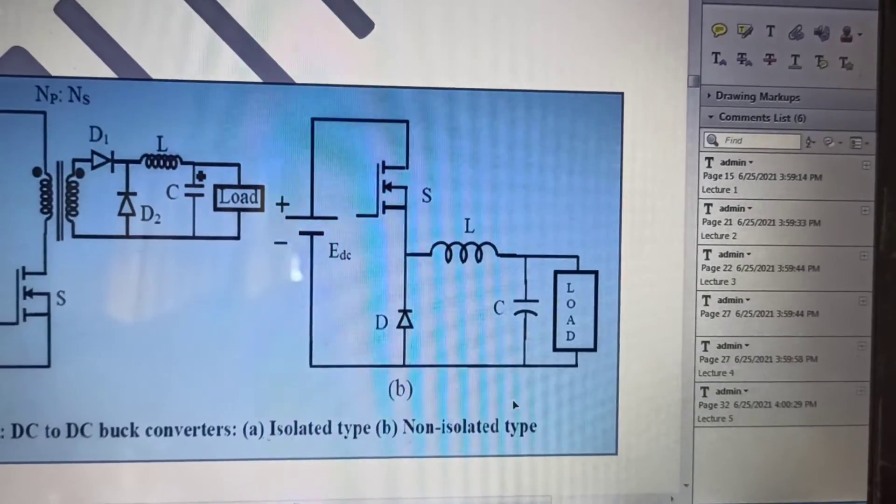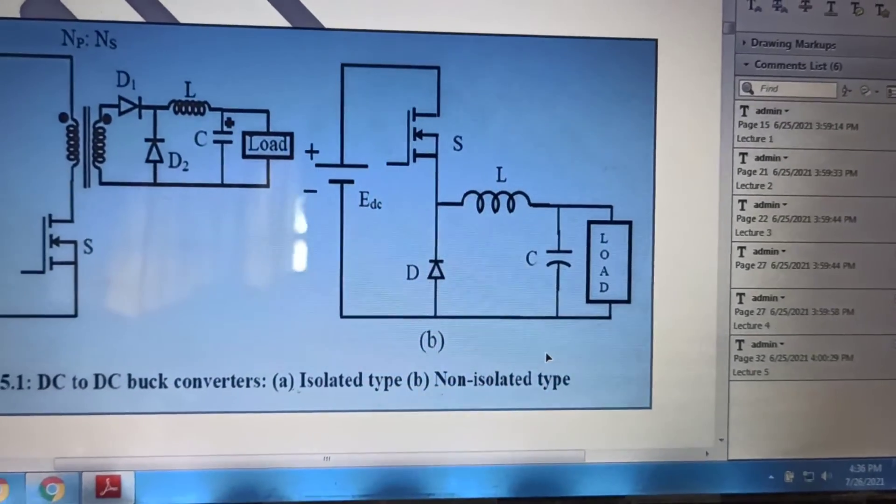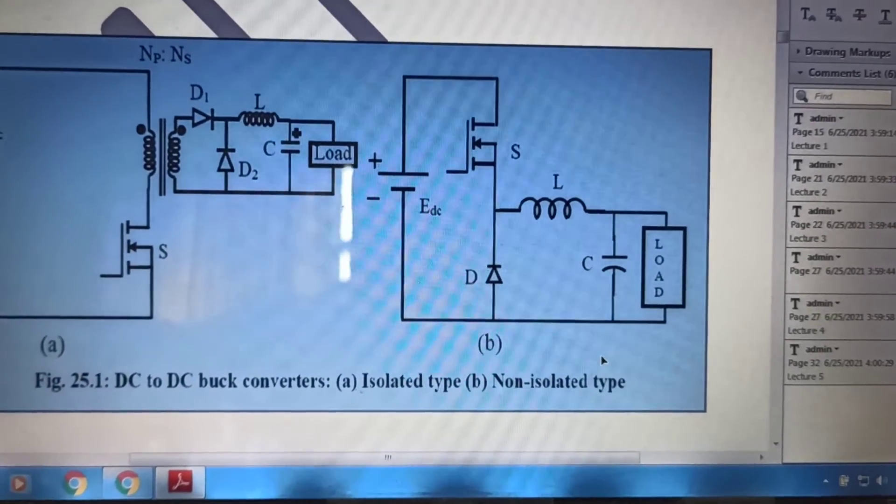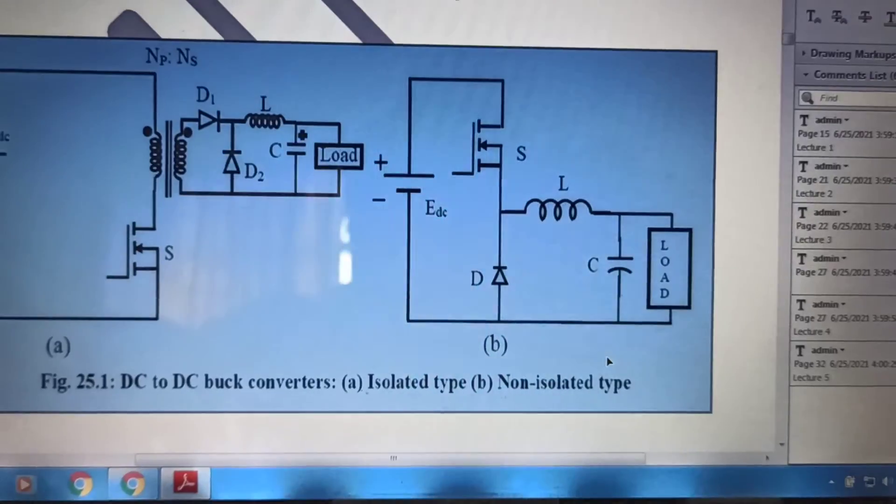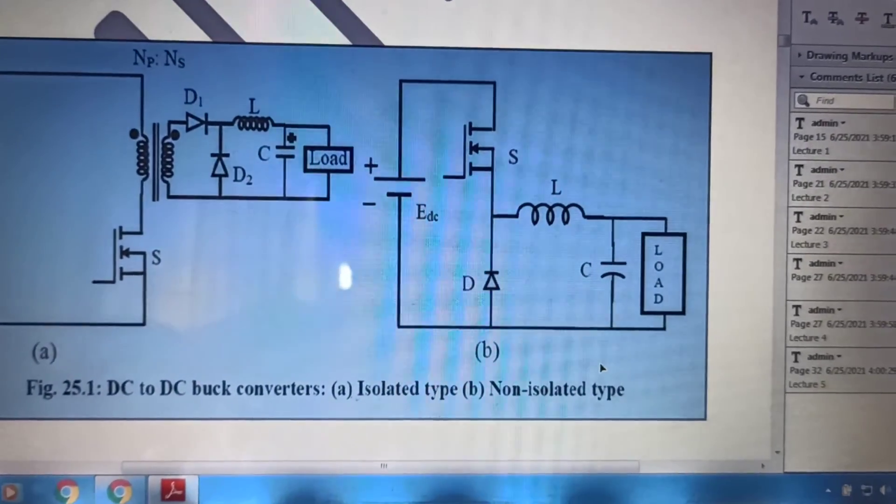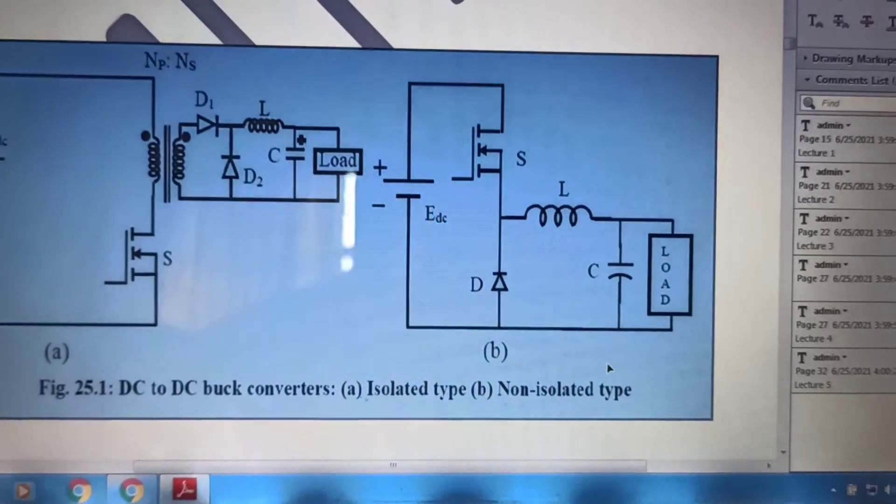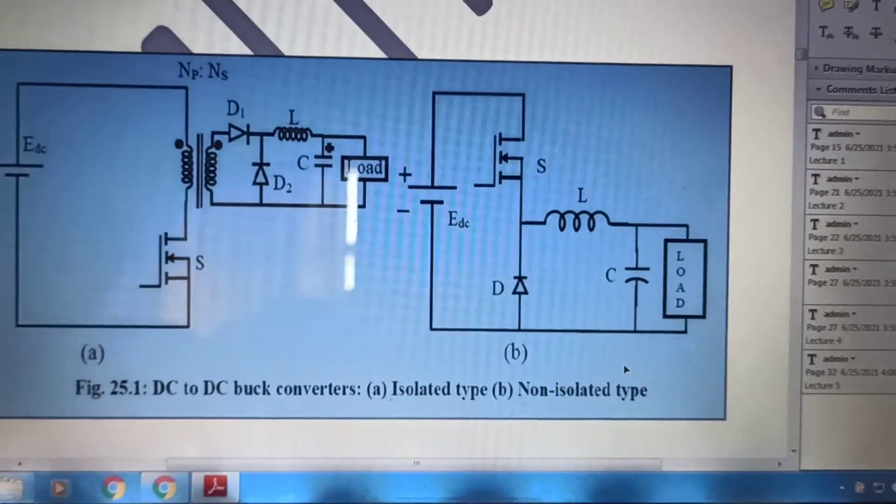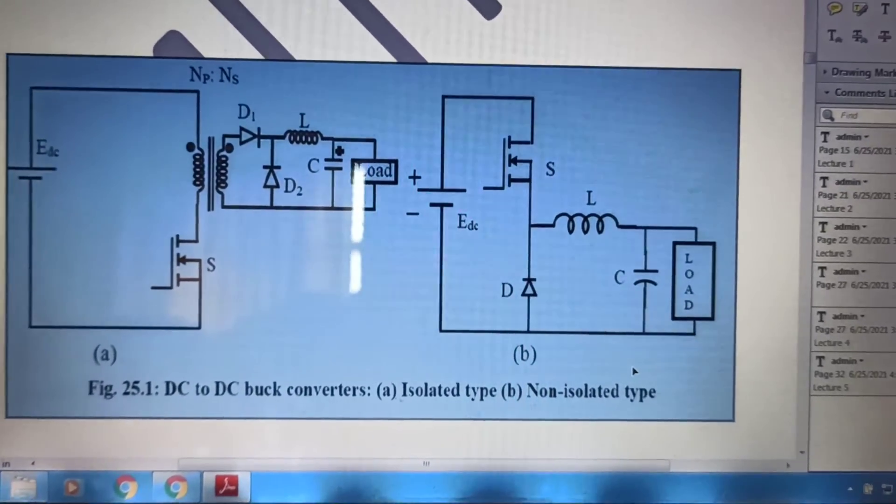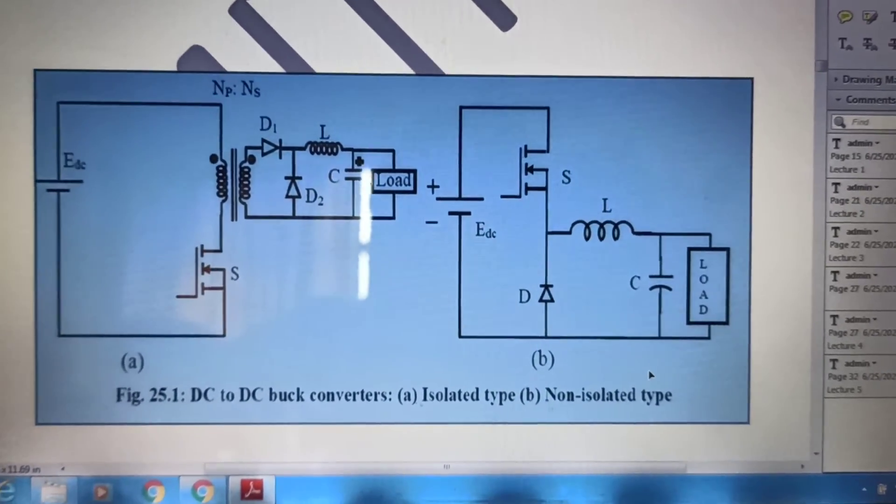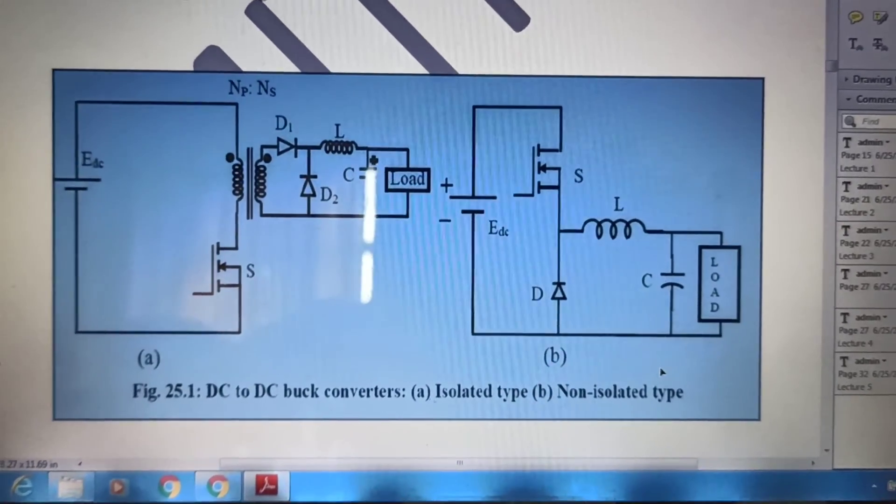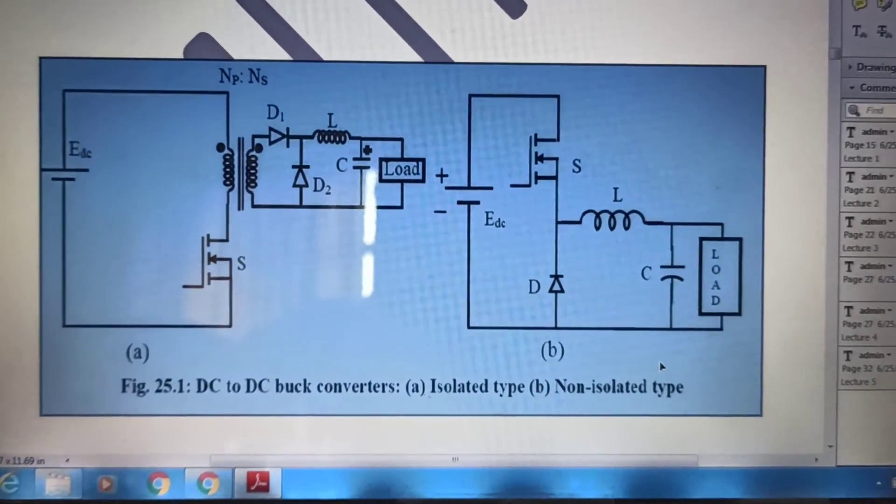That ampere current law will hold. So, when we will, no sorry, I beg my pardon, because for inductor, the volt second balance will hold, because the current through the inductor is periodic. As the current is periodic, so the volt second balance will definitely hold. And as it will hold, then we can straight away say that voltage into T on, V on, Vl into T on, plus Vl into T off should be 0.